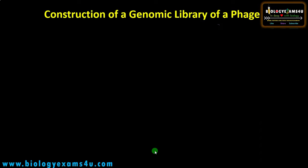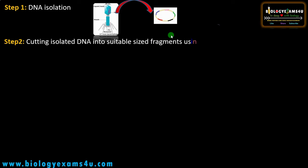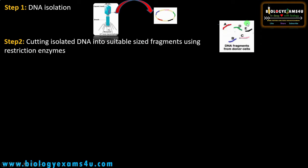Let's take an example: construction of a genomic library of a phage. Phages are viruses that attack bacteria. First we need to isolate the DNA — suppose this is the DNA of the phage with a very small genome containing five genes: A, B, C, D, and E. Then we cut this isolated DNA using a suitable restriction enzyme into suitable-sized fragments. Next, these fragments are incorporated into suitable vectors like plasmid or cosmid.